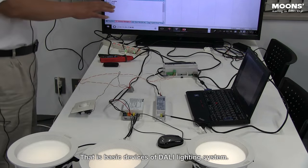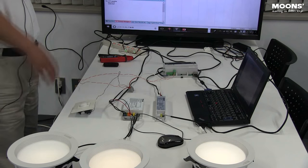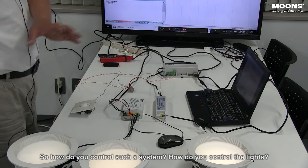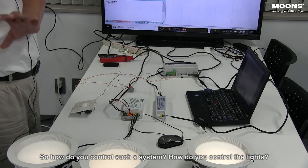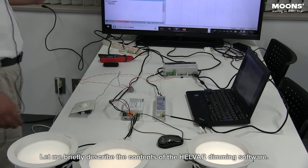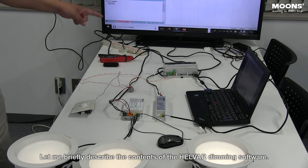That is basic devices of DALI lighting system. So how do you control such a system? How do you control the lights? Let me briefly describe the contents of the Helver dimming software.